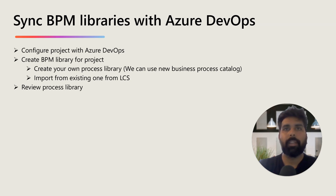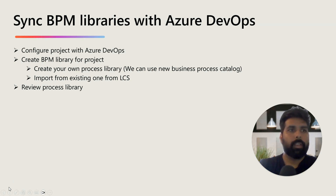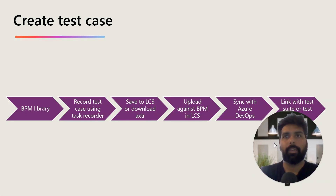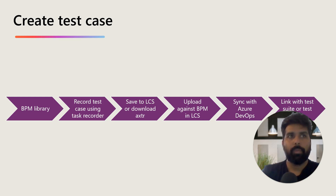There are different ways to create a process library — you can import directly to Azure DevOps, or create in BPM and then sync with Azure DevOps. The important thing is how you create the test case using the Task Recorder, how you upload it, how it gets converted into a test case in Azure DevOps, and how you link it with the test suites you have created. The process is: BPM library → record the test case using Task Recorder → save to LCS or download as an AXDR file → upload it against the process → sync with Azure DevOps → link the test case with test suites or the test plan.